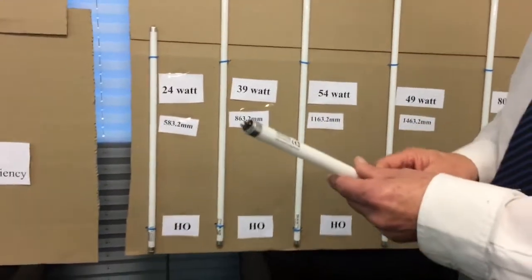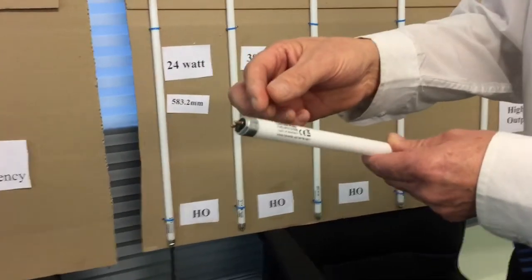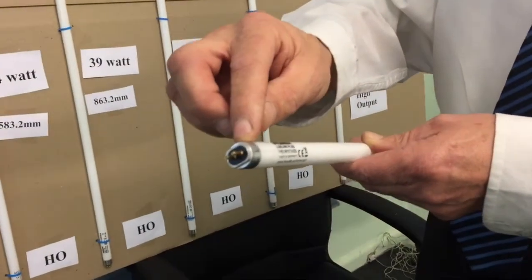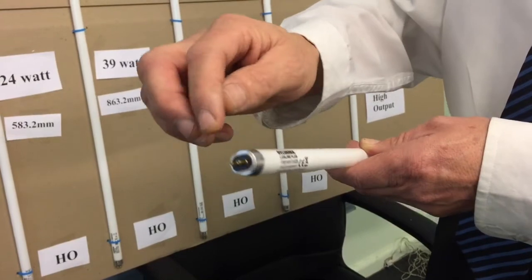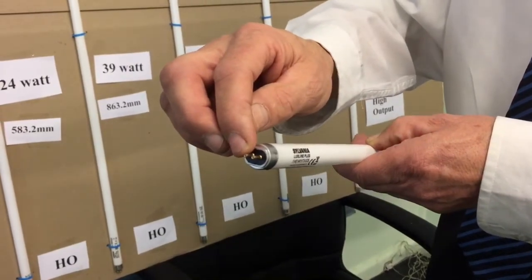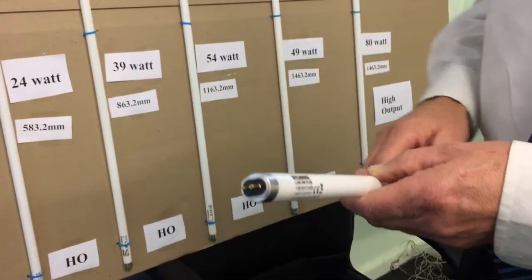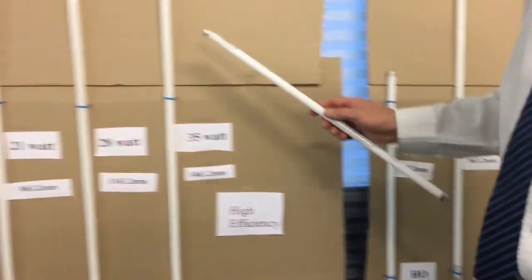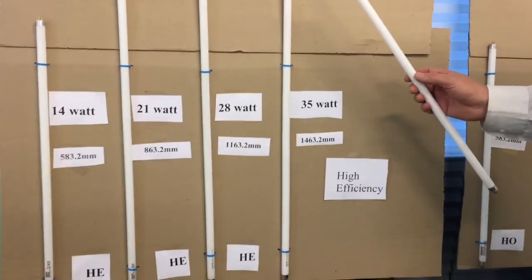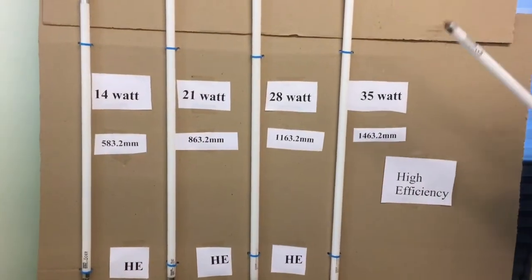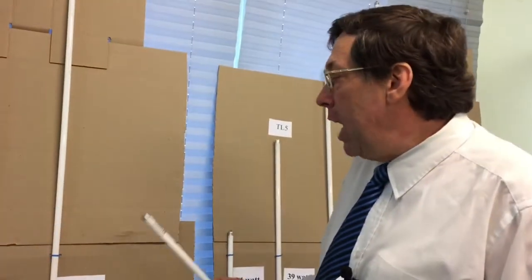The diameter of the T5 will be 16 millimeters in diameter and the base type is a G5. Both units run off high frequency ballasts. They are environmentally friendly with low mercury content and the rated average life is 24,000 hours.